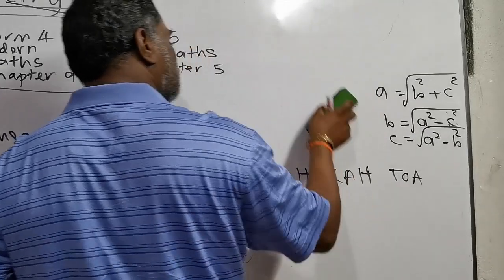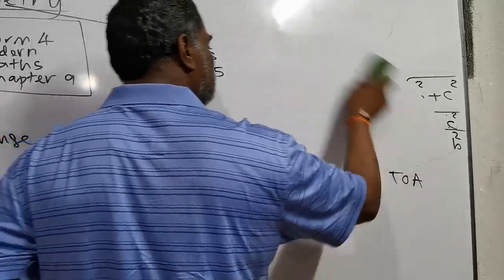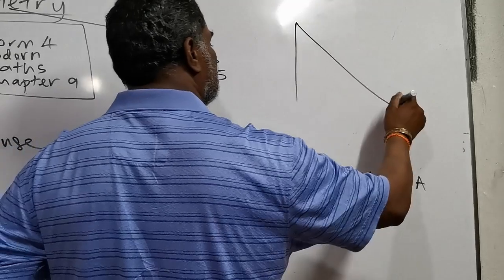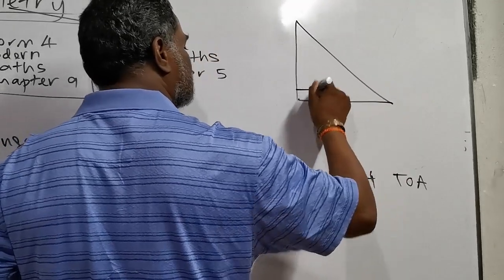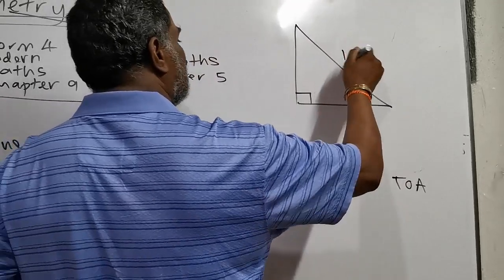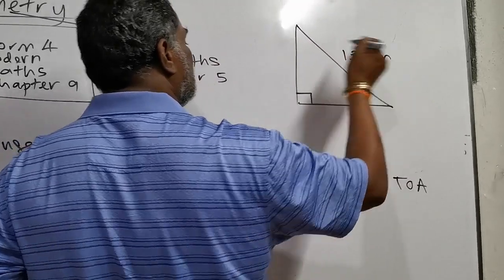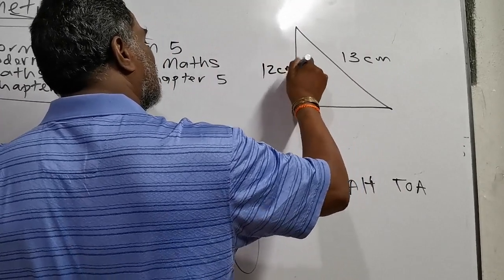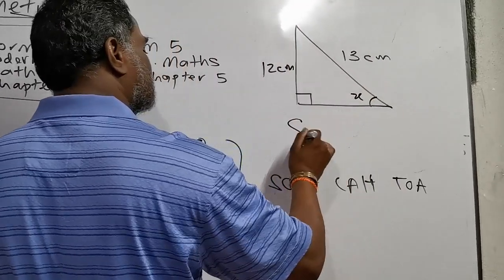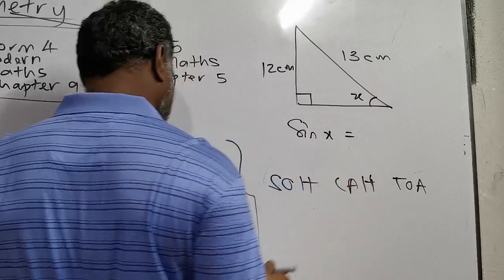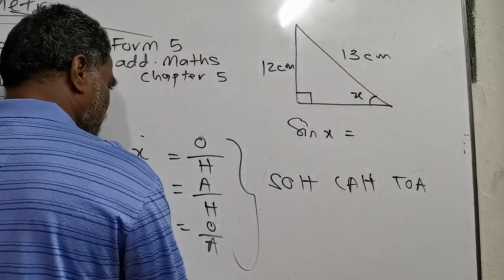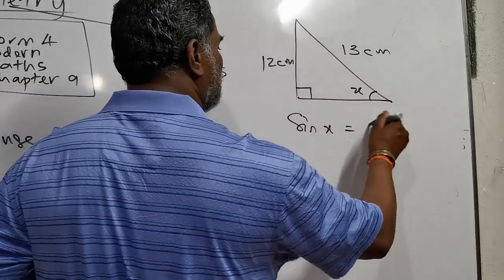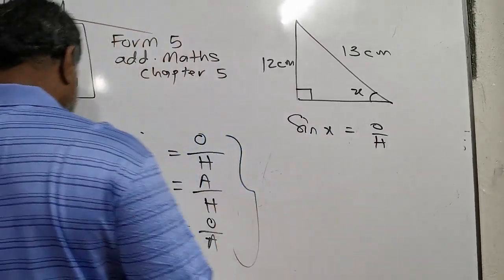I'll give you an example now. In an exam, they give you a right triangle with sides 13 and 12, and they ask you to find sin x. To find sin x, sin is opposite over hypotenuse. First, you need to understand where the opposite side is.